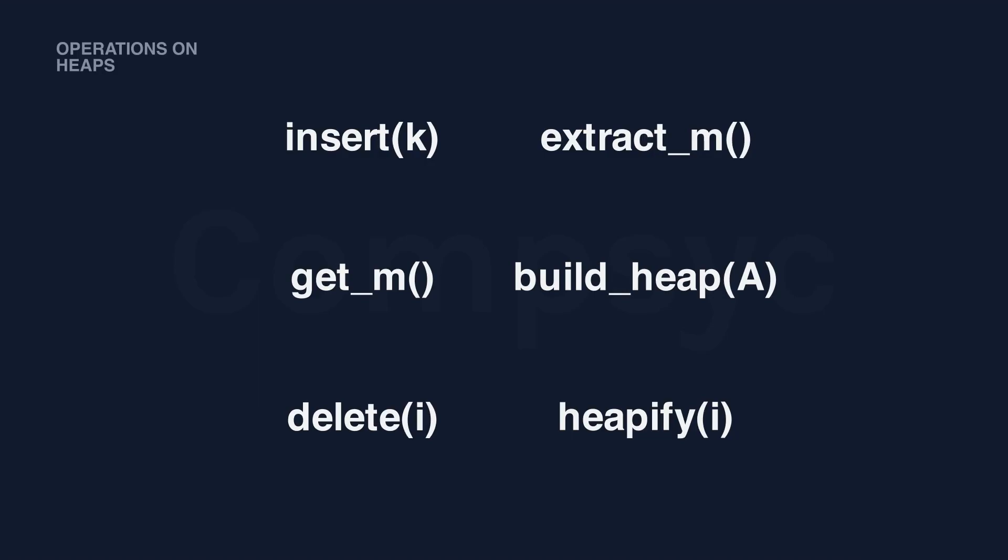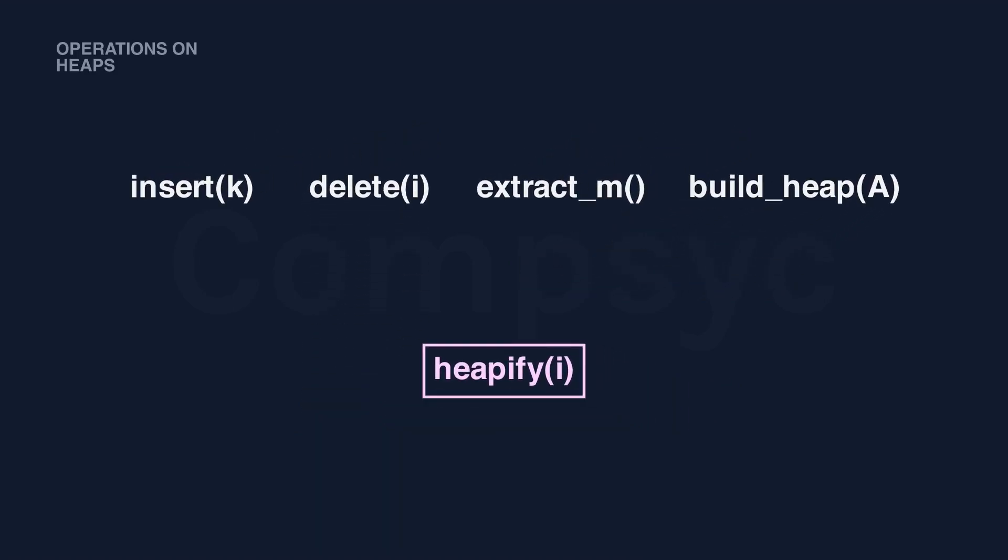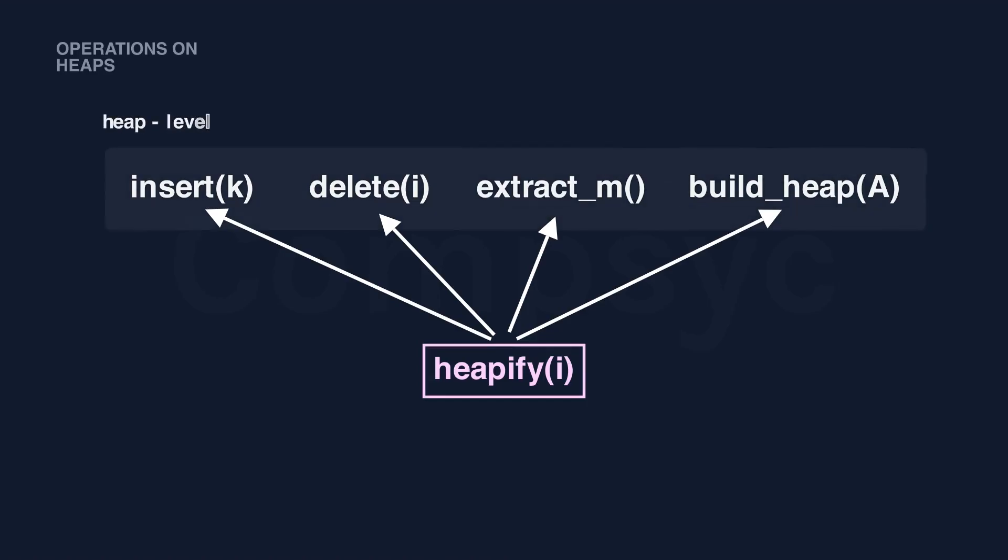Okay, now we have six operations. We could stop here, but I want to emphasize their relationships. Heapify is actually different from other operations. Why? Because heapify is used by all other operations, except get m. So let's get rid of get m since it's simple and not relevant. Now all the rest four operations rely on heapify to do their jobs. The differences between them and heapify is that insert, delete, extract, build heap, they all operate on the heap level. So they need to maintain the order of a heap. However, heapify only cares about a node, so it operates on the node level. This is why heapify is unique.